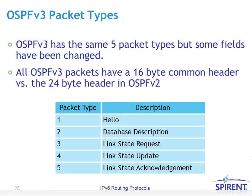OSPF version 3 packet types are similar to OSPF version 2, with the same five packet types, but some fields have changed. All OSPF version 3 packets have a 16-byte common header, as opposed to the 24-byte common header in OSPF version 2. Packet type 1 is hello packets, 2 is database descriptions, 3 is link state requests, 4 is link state updates, and 5 is link state acknowledgements — these are similar but have a slightly different structure in OSPF version 3 versus version 2.